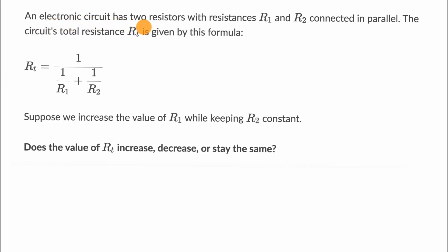We're told an electronic circuit has two resistors with resistances R1 and R2 connected in parallel. The circuit's total resistance RT is given by this formula. Suppose we increase the value of R1 while keeping R2 constant. Does the value of RT increase, decrease, or stay the same? So pause this video and see if you can answer this question.